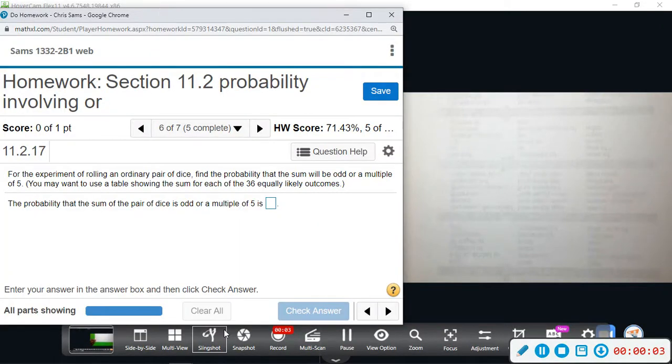Alright, number six. For this experiment of rolling an ordinary pair of dice, we want to find the probability that the sum will be odd or a multiple of five. So we're going to look at the sample space of a pair of dice and we're going to look at being odd or multiple of five. I don't think they give us one here, but let me pull one out.